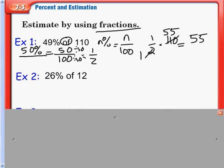Example 2: 26% of 12. A number close to 26% that works with 100 is 25, because 25 goes into 100 four times. So we estimate to 25%, and 25% equals 25 over 100.